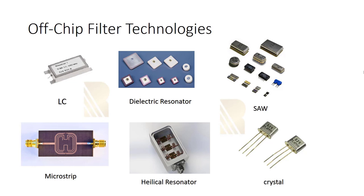Microstrip filter is another off-chip filter, and its fabrication is similar to a microstrip antenna — we have a dielectric and copper, etched into shape. We use microstrip filters in different kinds of applications. Helical resonators and crystal filters are other examples of off-chip filters.